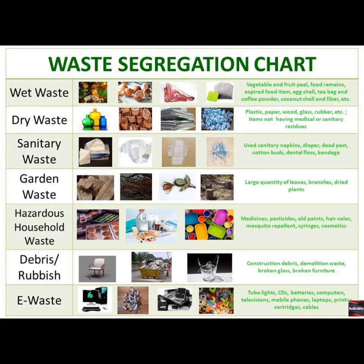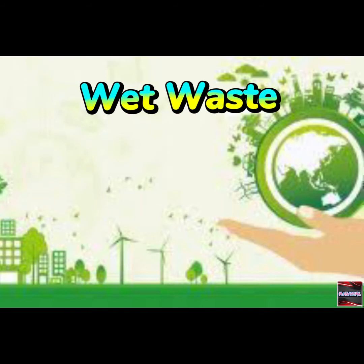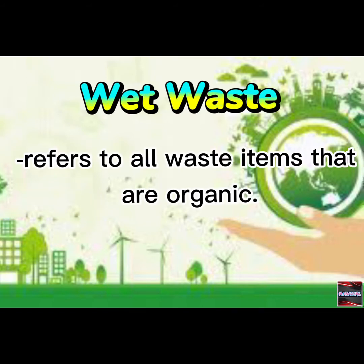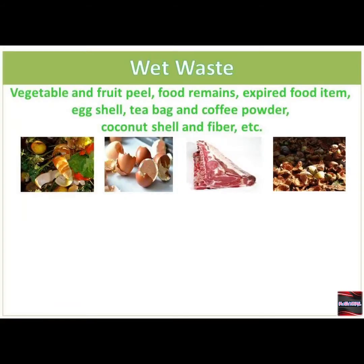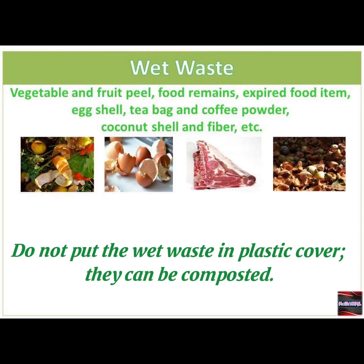Wet waste refers to all waste items that are organic. Wet waste includes vegetable and fruit peel, food remains, expired food items, egg shells, teabag and coffee powder, coconut shell and fiber, etc. Do not put wet waste in a plastic cover — they can be composted.